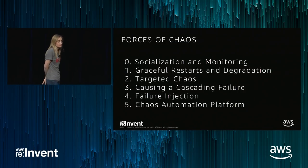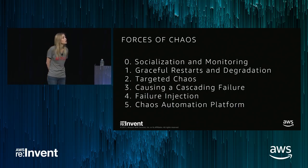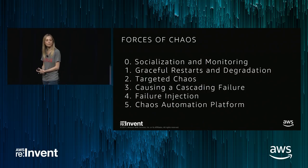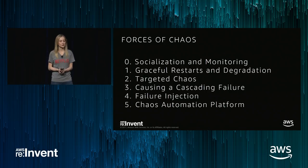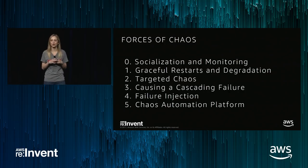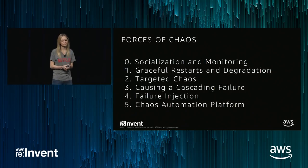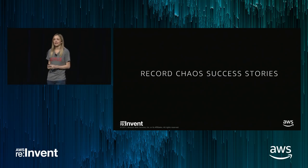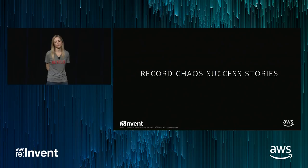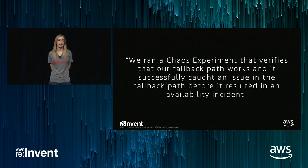We've talked about a lot of forces of chaos today: socialization and monitoring, graceful restarts and degradation, targeted chaos with the Kafka example, causing a cascading failure, failure injection frameworks, and chaos automation platforms. One thing consistent throughout all of this was safety and monitoring our key business metrics. And one thing I argue you should do throughout every force of chaos is to record your success stories.